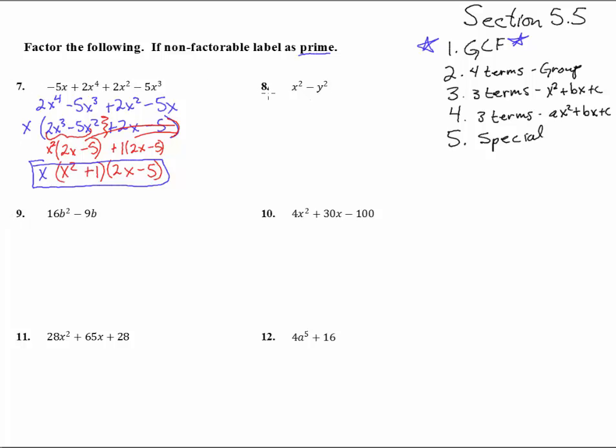Okay, next one. Here we have number 8, x squared minus y squared. Is there a greatest common factor? Remember to check that every time. Greatest common factor, and no, there's not. 4 terms? Nope. 3 terms? Nope.